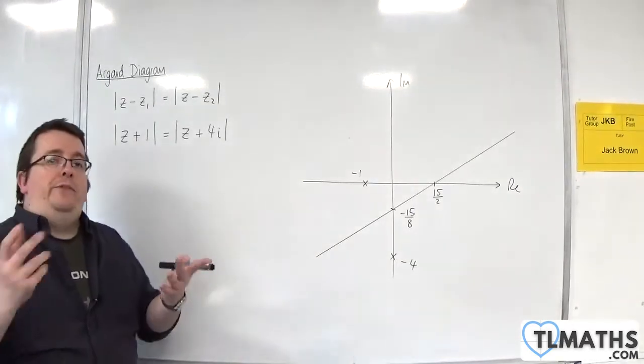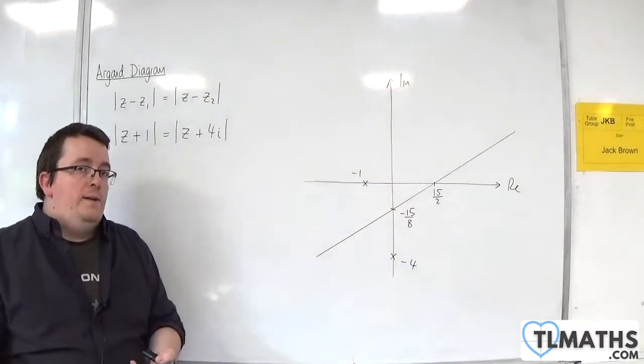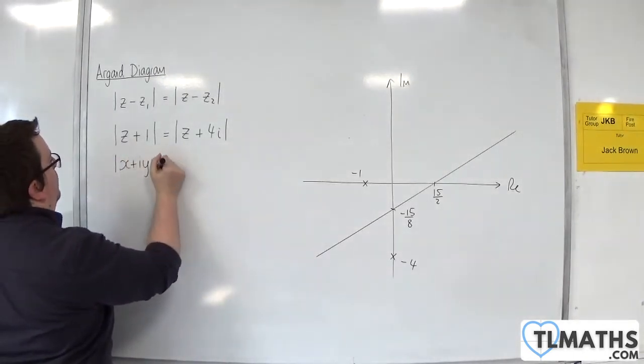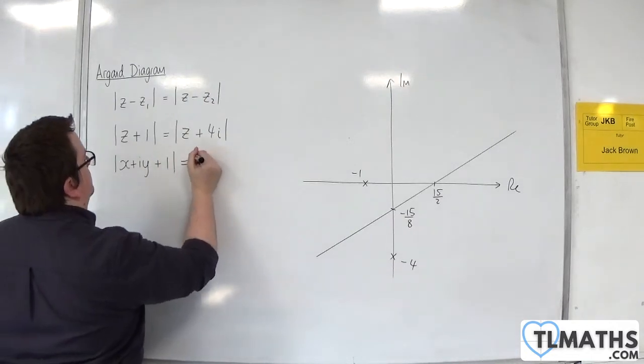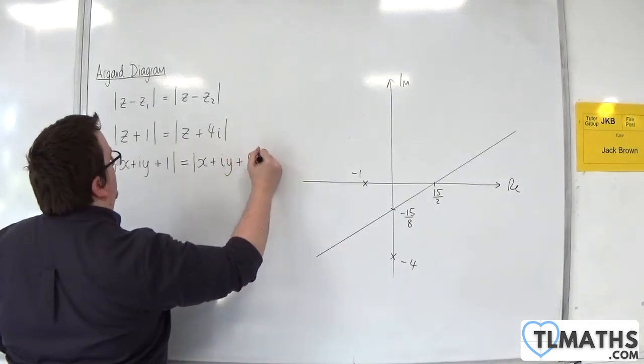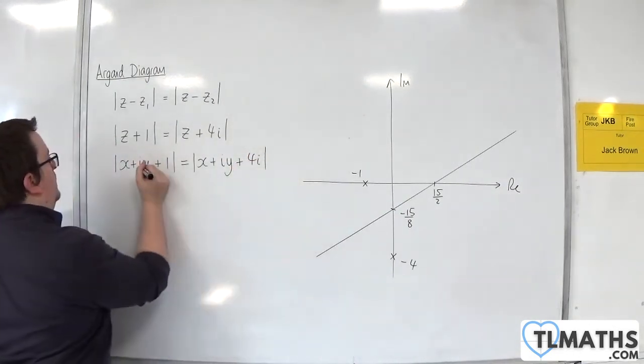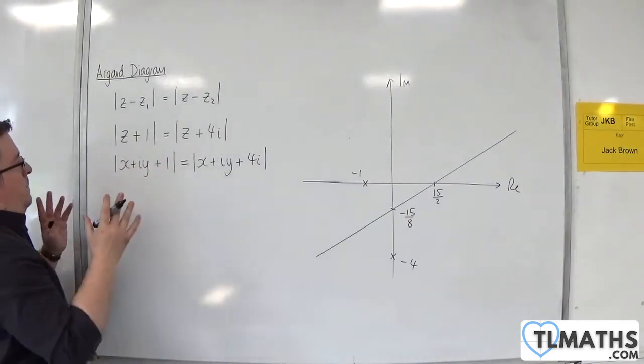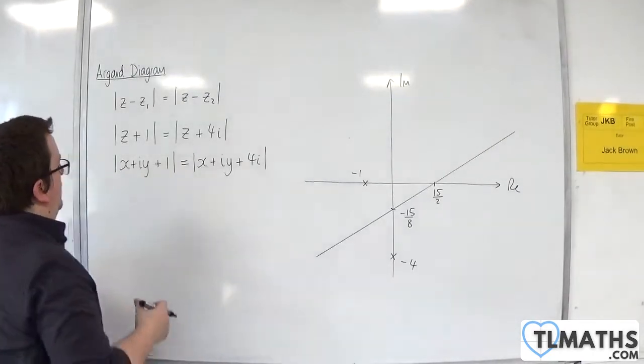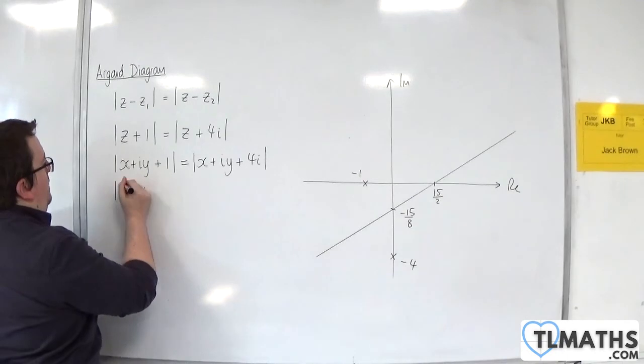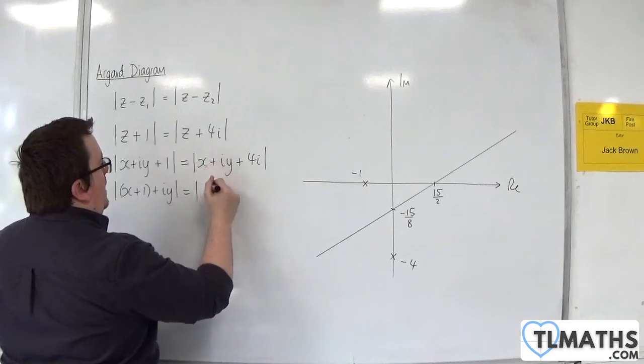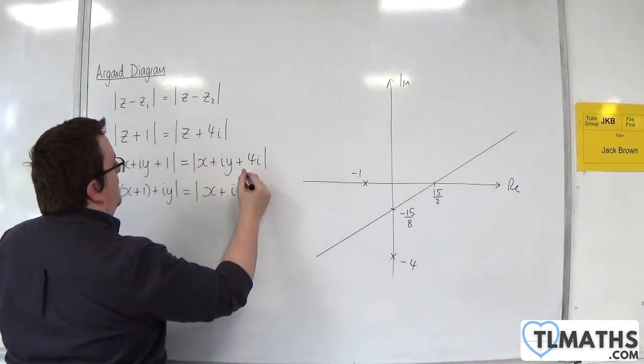Remember that z equals x + iy. What I'm going to do is replace the z's with x + iy. Then I'm going to combine the real parts and the imaginary parts within the moduli: |x + 1 + iy| = |x + i(y + 4)|.